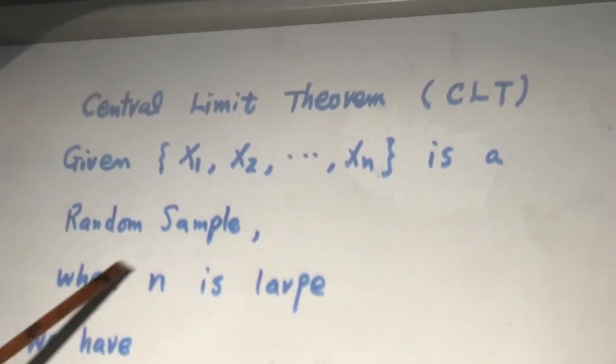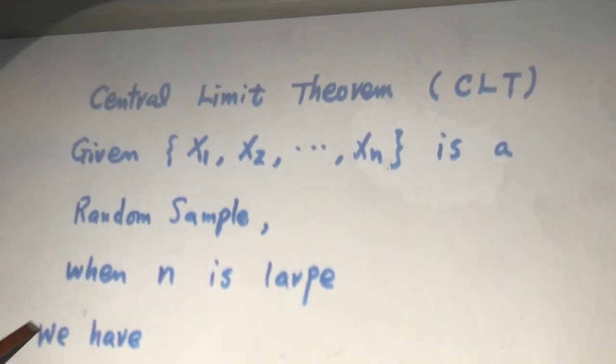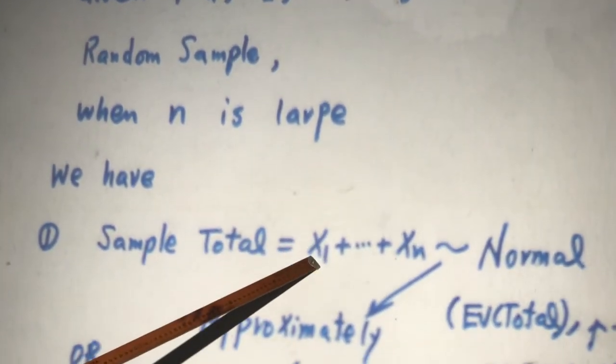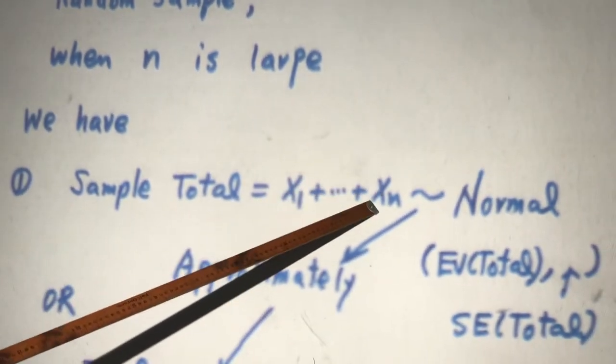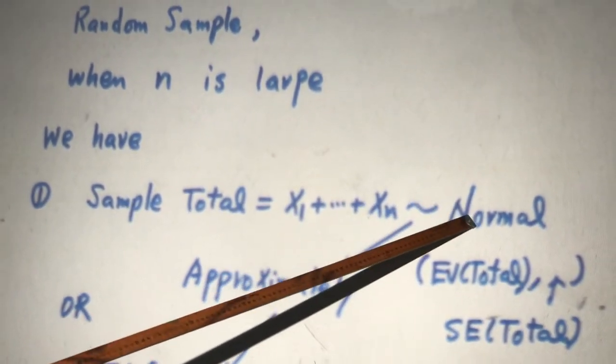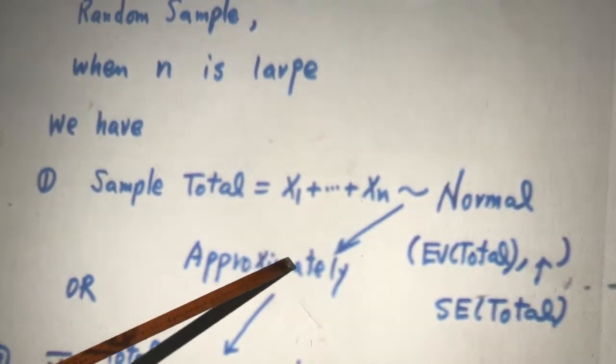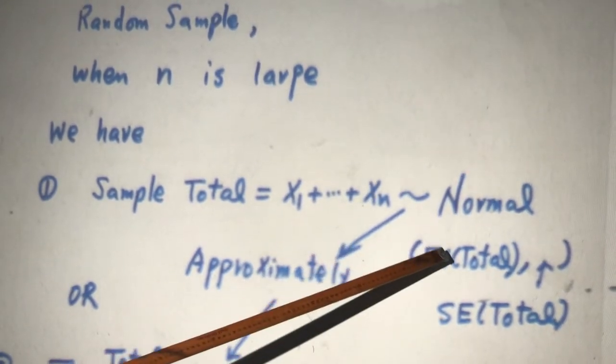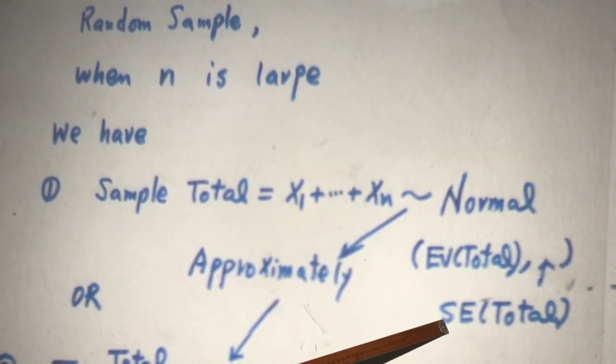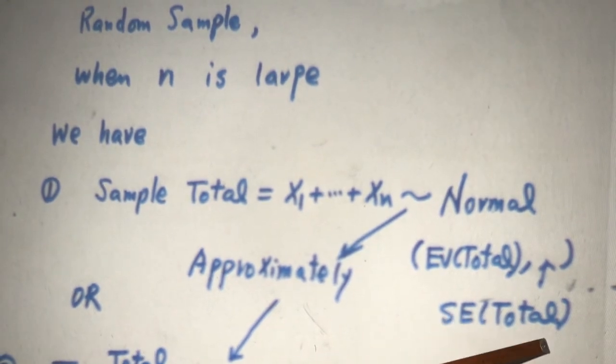Now, when sample size is large enough, what do we have? We have sample total. That is X1 plus all the way up to Xn will follow normal, but not exactly normal. It's approximately normal, with mean is EV sample total, standard deviation SE sample total.